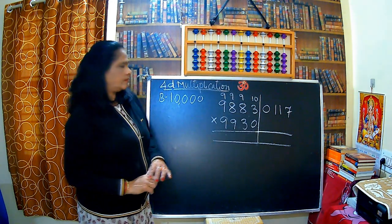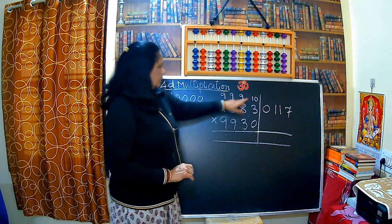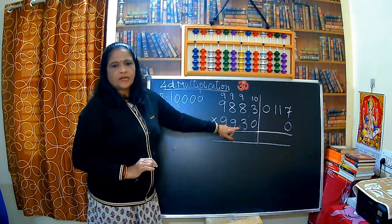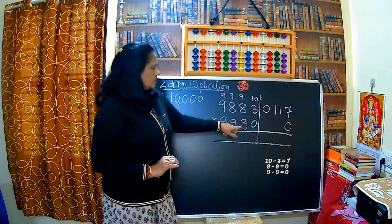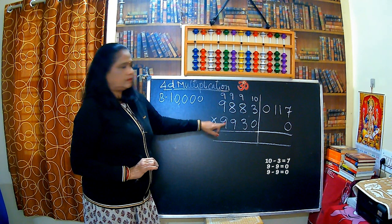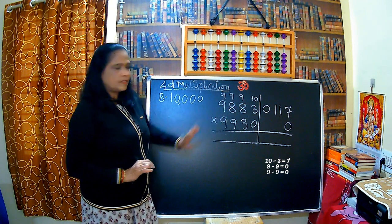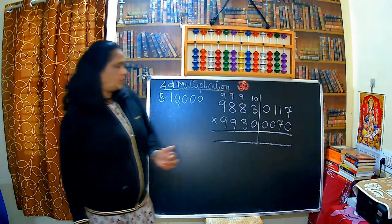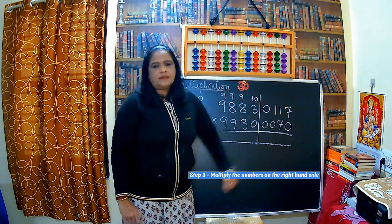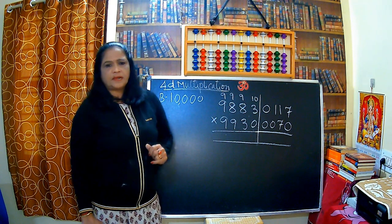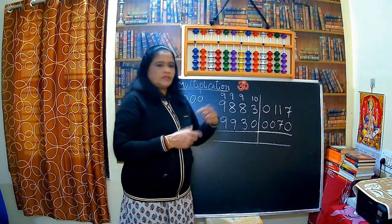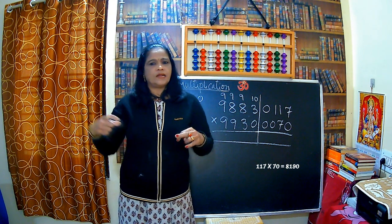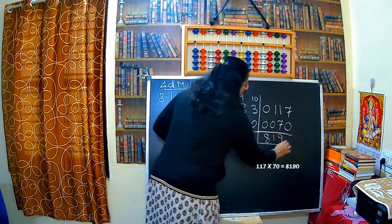For 9930: the last digit is already 0, so we write it as is, then apply the Nikhilam Sutra to the remaining digits: 10 minus 3 is 7, 9 minus 9 is 0, 9 minus 9 is 0. So the deficit is 0070, meaning 70. Right-hand side: 117 multiplied by 70 is 8190. Left-hand side is cross subtraction.